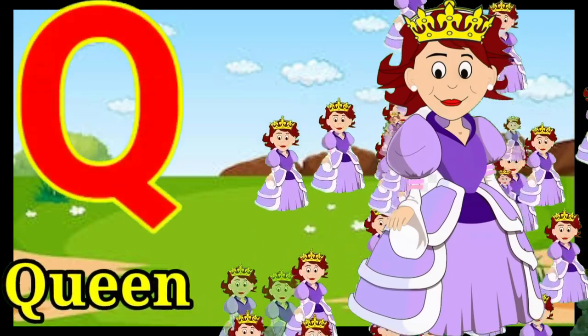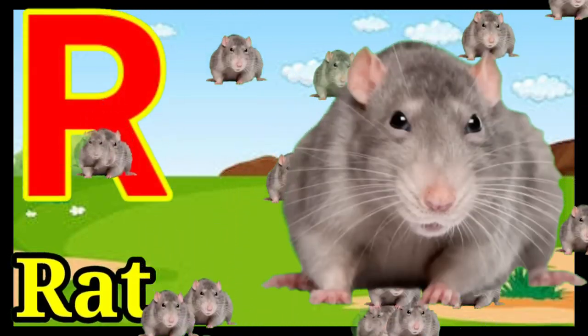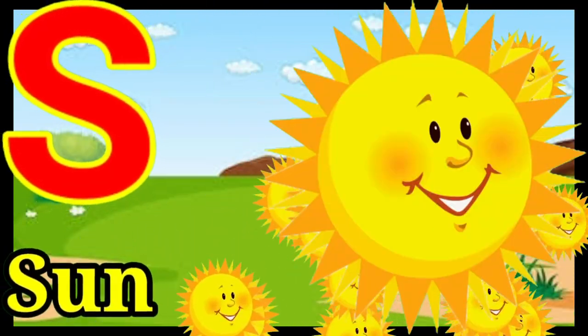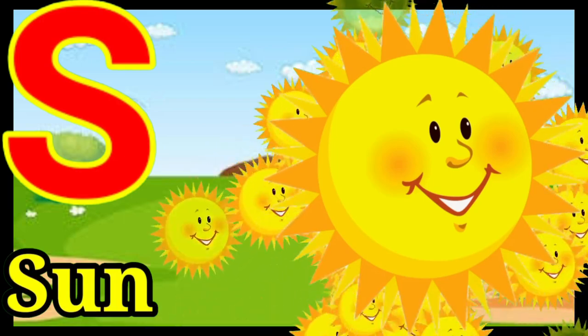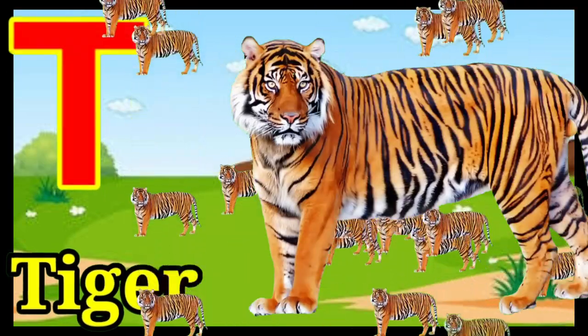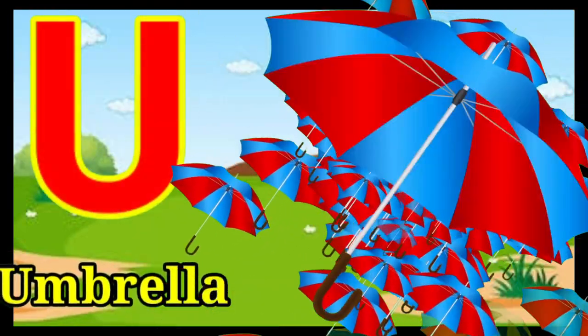Q for queen, R for rat, S for sun, T for tiger, U for umbrella.